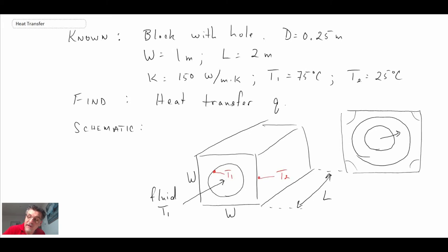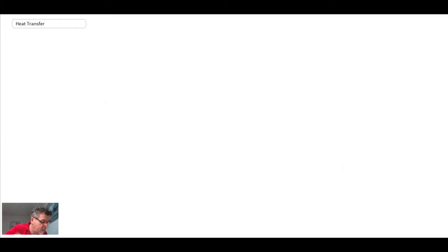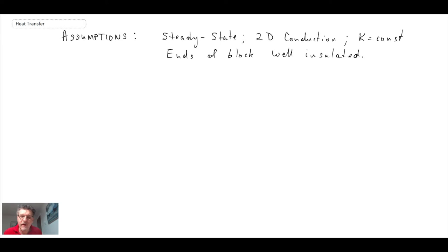Let's take a look at the assumptions and then we'll work through the theory, basically using the shape factor. Okay, so we're assuming this is happening in steady state and that we have 2D conduction.